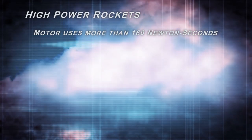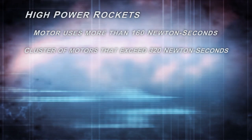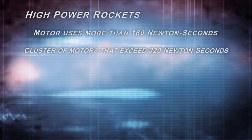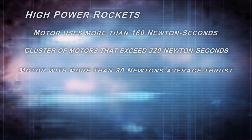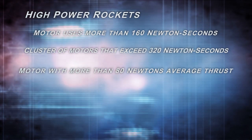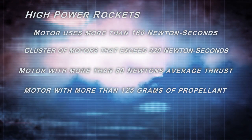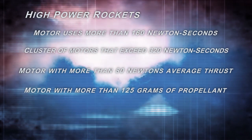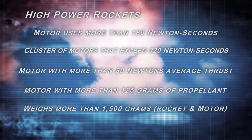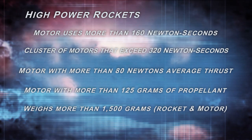High power rockets also use a cluster of motors that together exceed 320 Newton seconds, a motor with more than 80 Newtons average thrust, a motor with more than 125 grams of propellant, or they weigh more than 1500 grams including the weight of the motor.